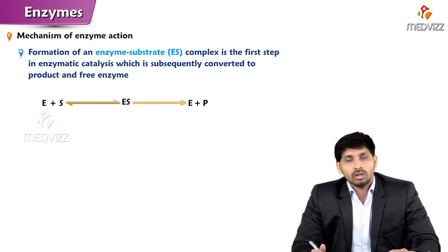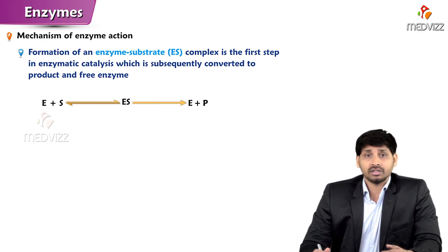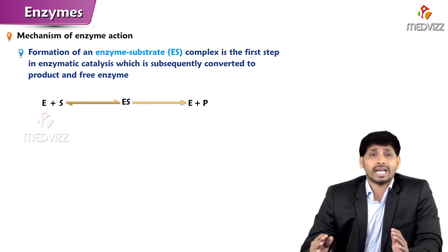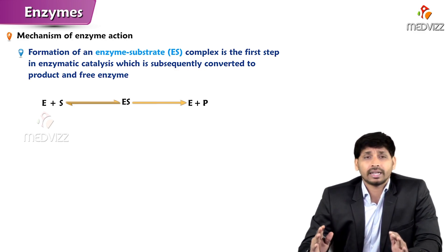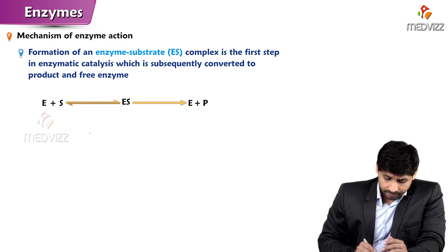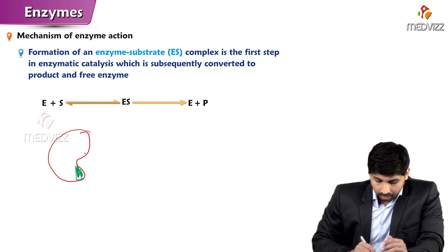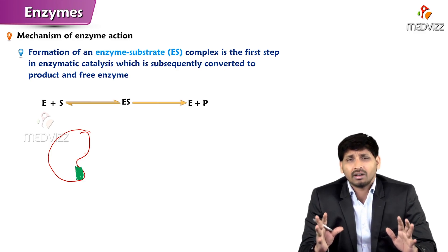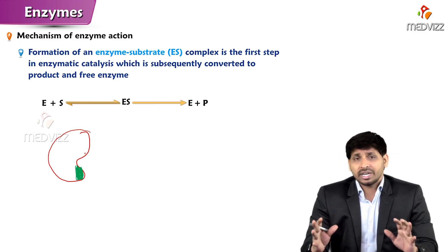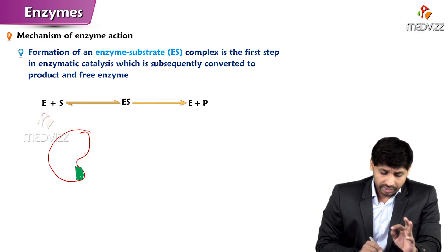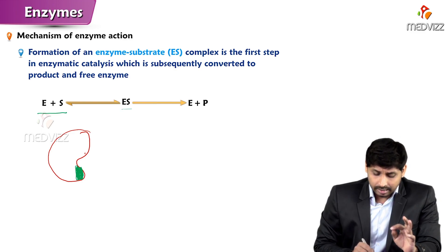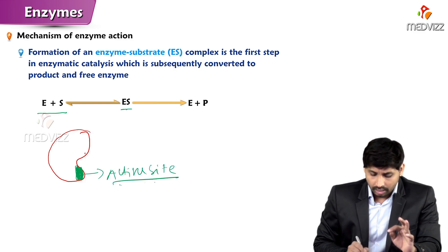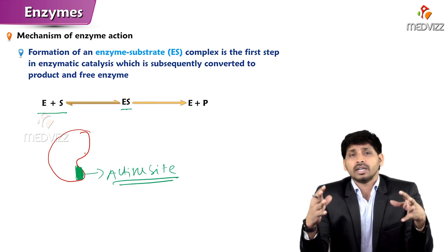Hello everyone. In this video we'll be talking about the mechanism of enzyme action. Before going into details, first we will see what is an active site. The active site is a part — a site on an enzyme. This part here is the active site. So the active site is nothing but a small area, pocket, or region where the substrate will go and bind to the enzyme.